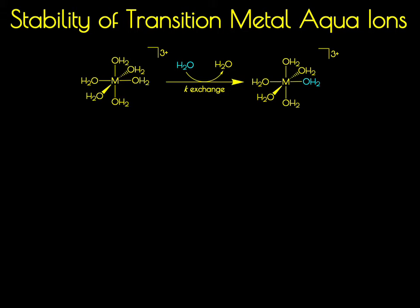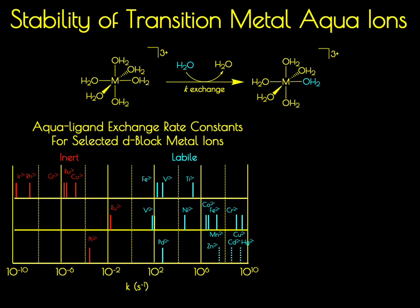Let's consider this water exchange reaction. We have an aqua metal ion complex — a transition metal center surrounded by six water molecules — and we're looking at the exchange of one water molecule for another. We can determine a rate constant for this, a K of exchange. If we do this for transition metal ions, what we find is that this exchange rate constant covers over 20 orders of magnitude, from rate constants that are very fast to rate constants that are very slow.